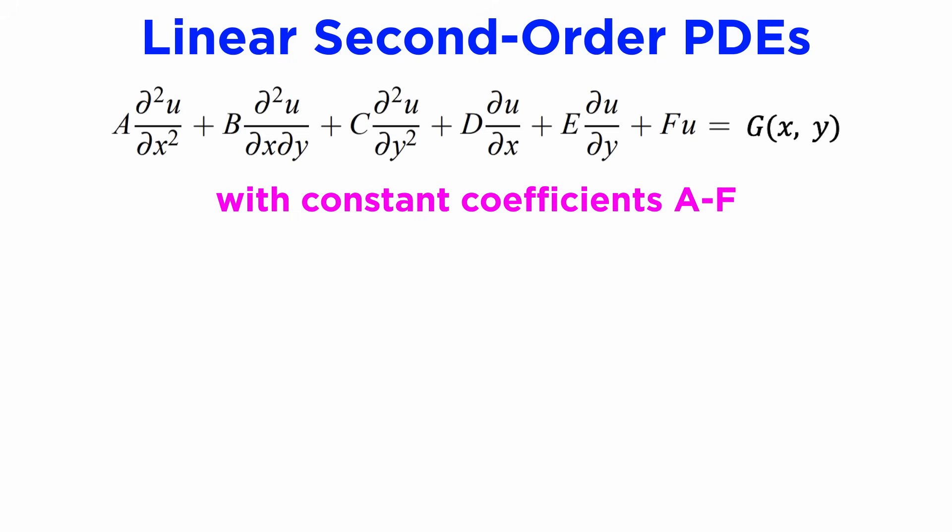which can be generally represented as this sum of six terms, with all the different partial derivatives up to second order on the left multiplied by constants a through f, and a general non-homogeneous component g of xy on the right. Here it is in D operator notation.